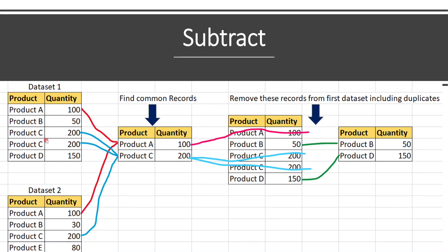Let me explain with a pictorial representation. Let's say we have data frame 1 and data frame 2. Product A 100 is common between these two data frames, and similarly product C 200 is also common. But the difference is that in the first data frame, product C 200 is duplicated. Now our requirement is to find only the records from data set 1 which are not available in data set 2. Using subtract, it will identify the common records — product A 100 and product C 200 — and remove all of them from the first data frame.